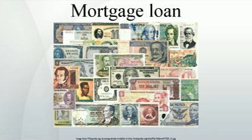Lender: any lender, but usually a bank or other financial institution. Lenders may also be investors who own an interest in the mortgage through a mortgage-backed security. In such a situation, the initial lender is known as the mortgage originator, which then packages and sells the loan to investors. The payments from the borrower are thereafter collected by a loan servicer. Principal: the original size of the loan, which may or may not include certain other costs.